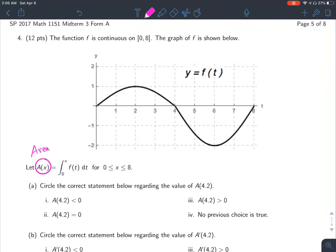Question a: Circle the correct statement below regarding the value of A(4.2). So if you put 4.2 in for x, that means we are trying to find the area under the curve from 0 to 4.2 of this function.